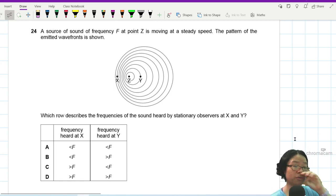Question 24. When you see this picture, you should think about Doppler effect. A source of sound of frequency f at point z.